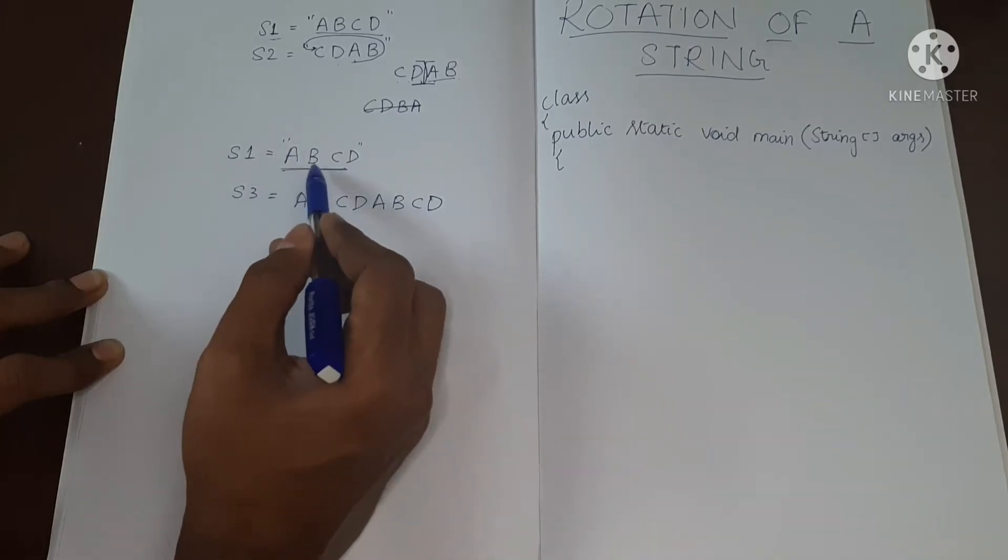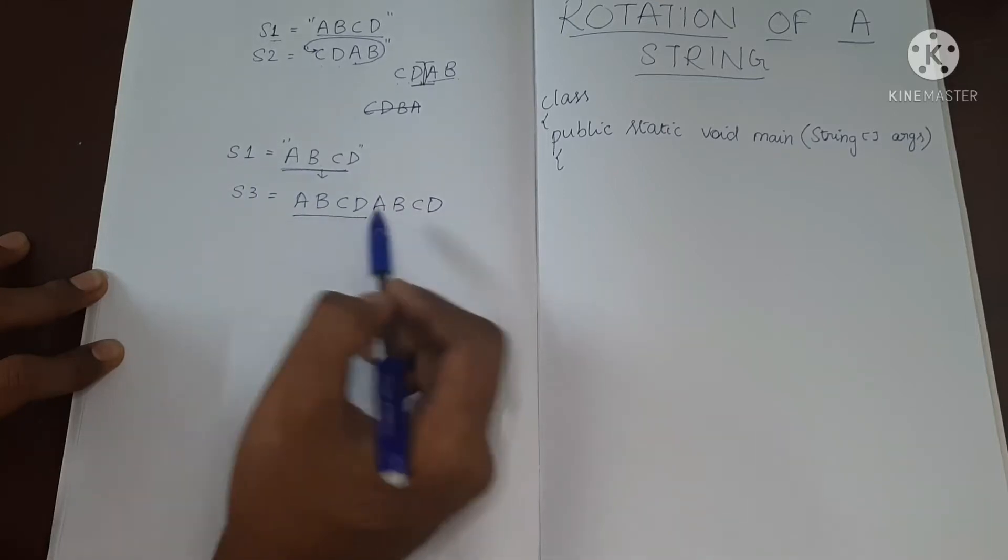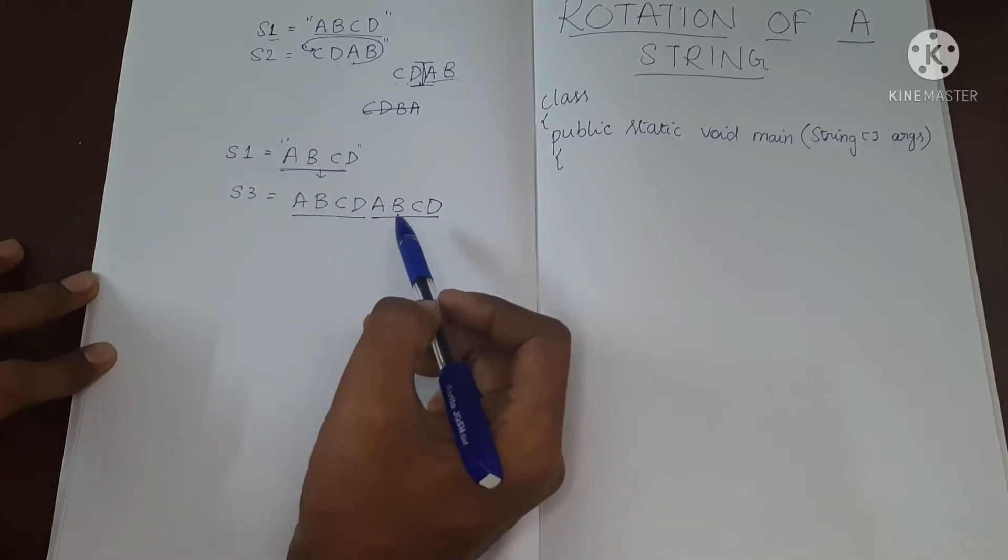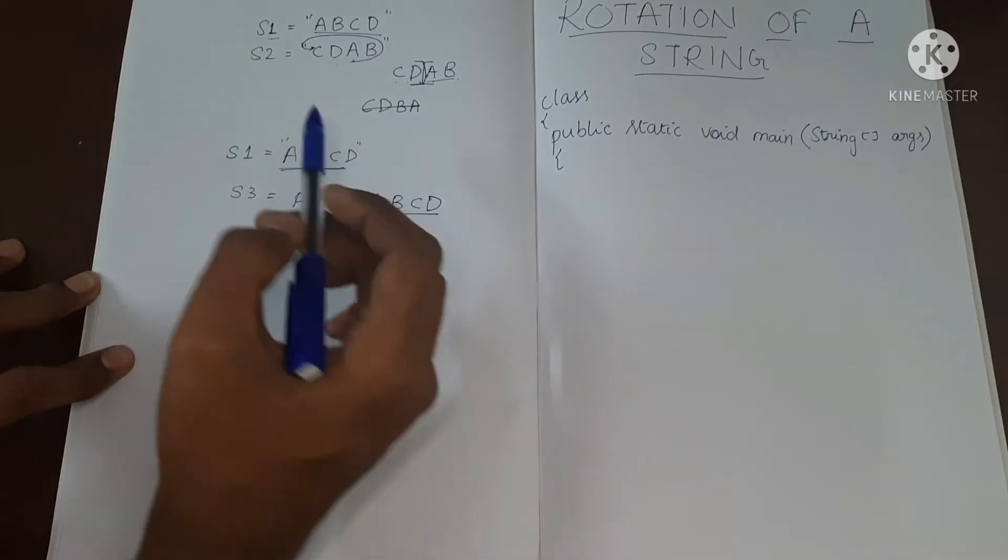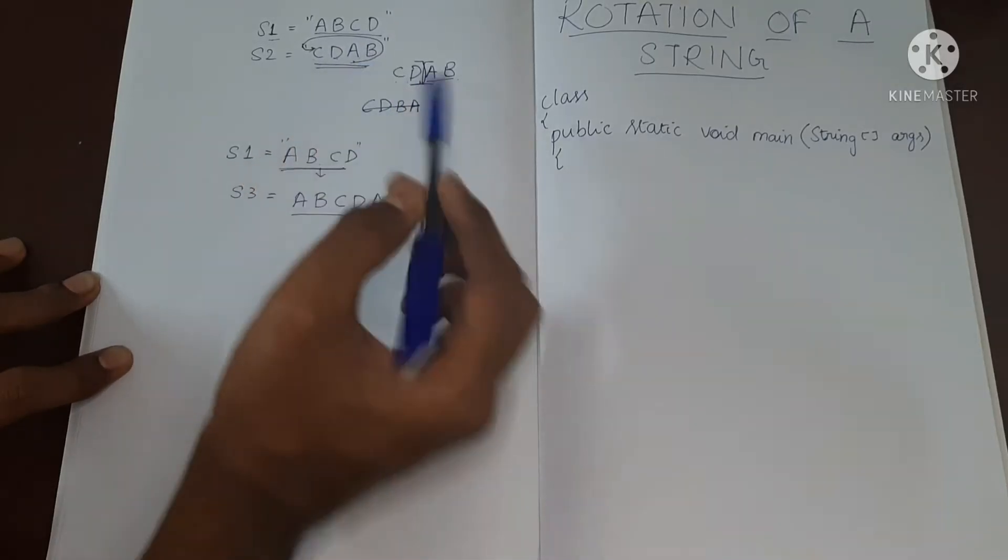We have just taken S1 two times. So this is one S1, this is one S1. And in this, if you try to search for S2, C, D, A, B, let's start from here.